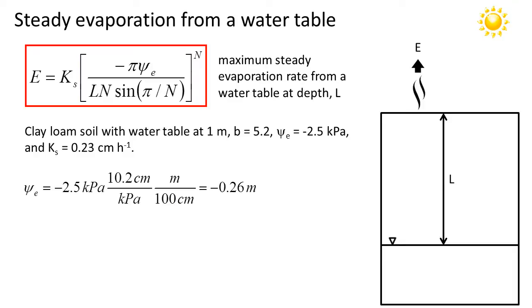We need to do some unit conversions before we proceed with the calculation. I'm going to convert the air entry potential from minus 2.5 kilopascals over to meters corresponding to the units for our water table depth. To do that, I just need to remember that there are about 10.2 centimeters of water per kilopascal, and of course there are 100 centimeters per meter. I want to convert the saturated hydraulic conductivity from centimeters per hour to millimeters per day, which is a more reasonable unit to use in evaporation calculations.